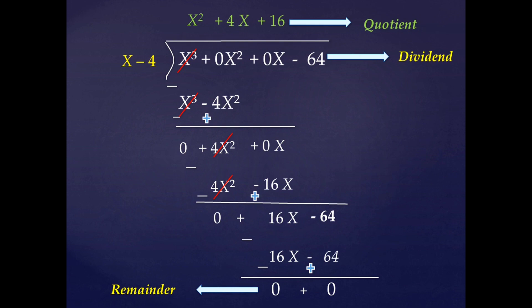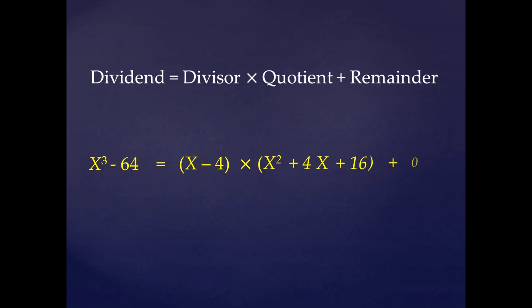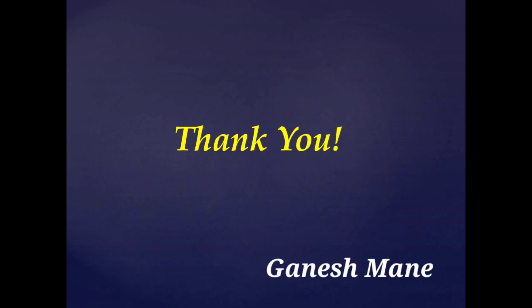Here, x³ + 0x² + 0x - 64 is the dividend and x - 4 is the divisor. We can write all these in the form: dividend = divisor × quotient + remainder. That is, x³ - 64 = (x - 4)(x² + 4x + 16) + 0. So this is how we can divide any two polynomials by the traditional method. I hope you understand the concept. If you like this content, please subscribe to the channel. Thanks for watching.